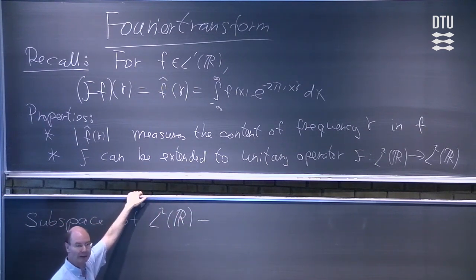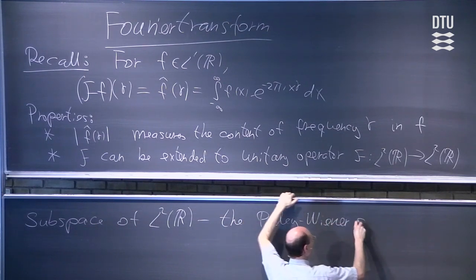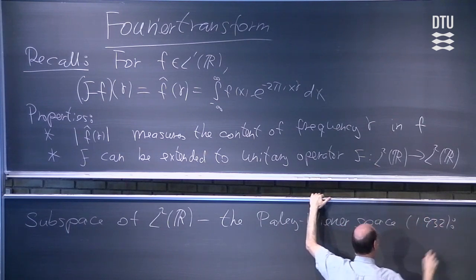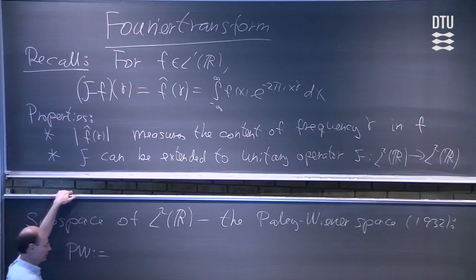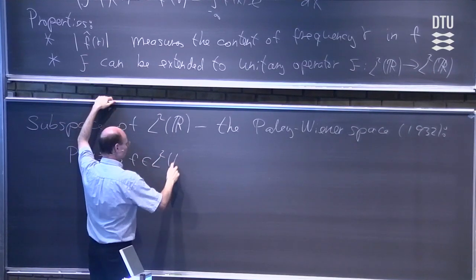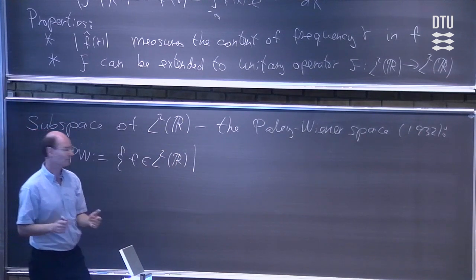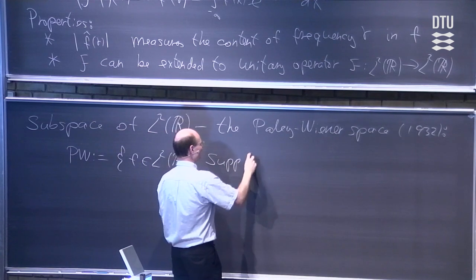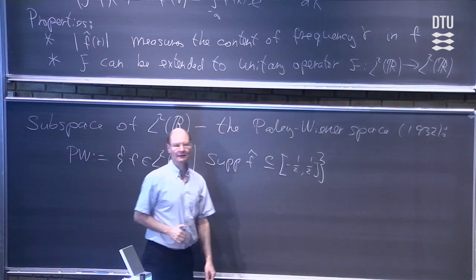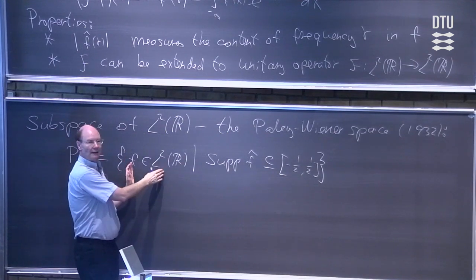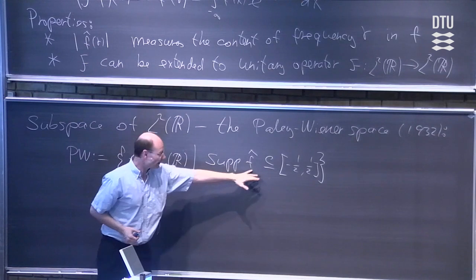This is the so-called Paley-Wiener space. The symbol is PW, and it is the set of functions in L2 of R that have the property that the Fourier transform is supported on the interval from minus one-half to one-half. So when we look at the support of f-hat, we get something that is contained in the interval minus one-half to one-half. The condition we are writing down is not in terms of f, it is in terms of the Fourier transform of f — this is the f-hat that we have here.